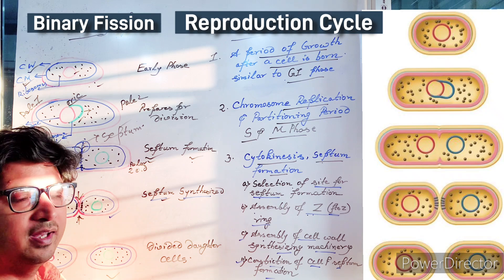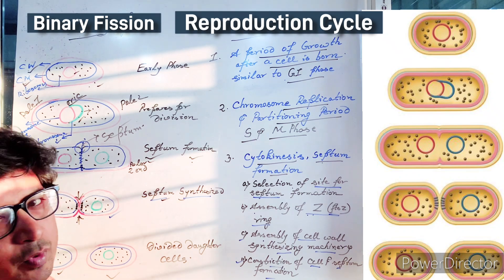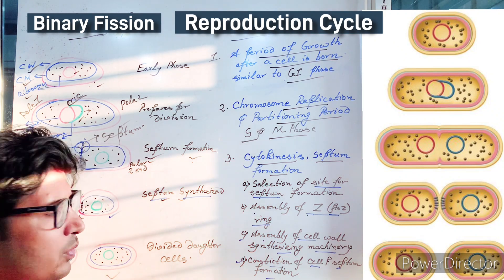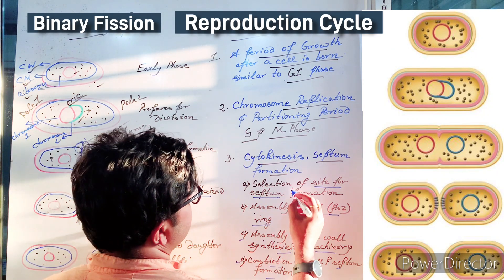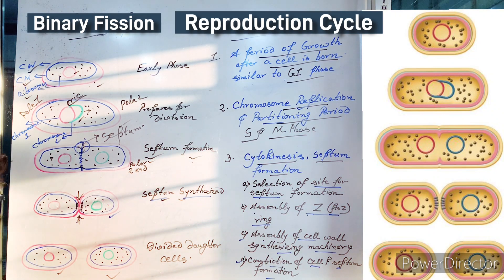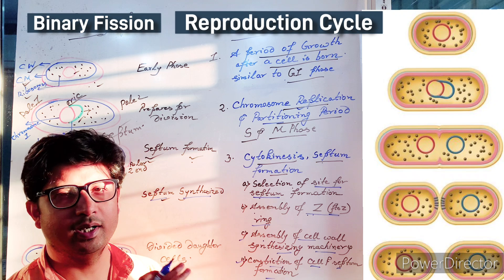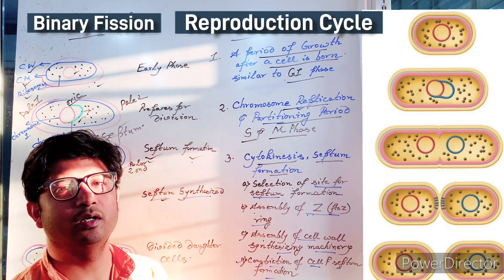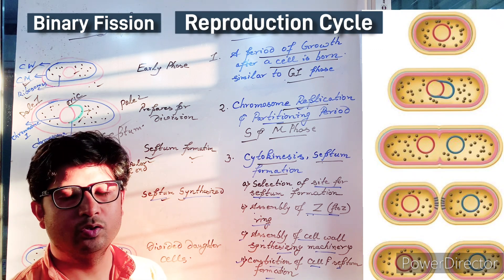Cytokinesis and division of the daughter cells then completes the process. This may seem very simple, but there are molecular events which have been very detailedly studied. I will touch on some of the molecular mechanisms here, though several proteins are beyond what you need for your syllabus. Binary fission is the most common and traditional way for bacteria to divide, mostly equally, but there are examples of bacteria which do not divide by binary fission and use other strategies to reproduce.